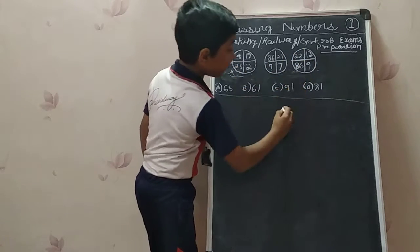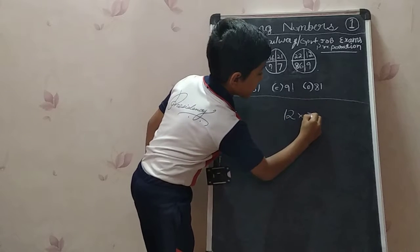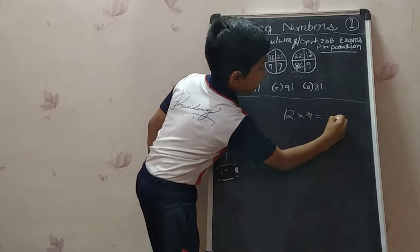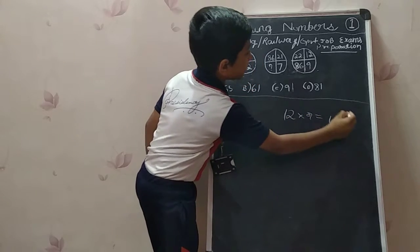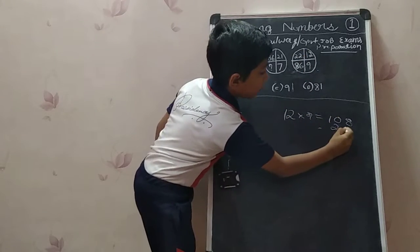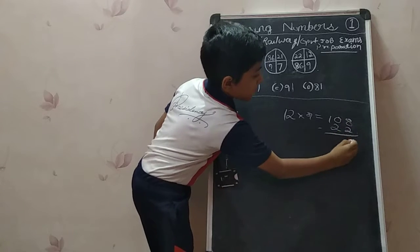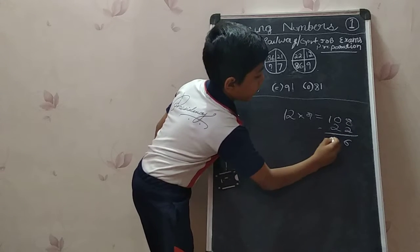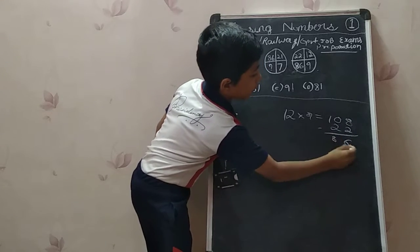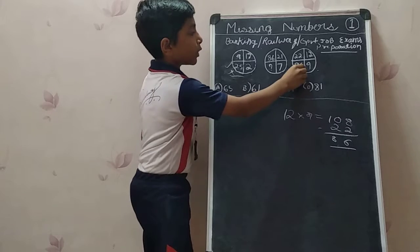20 into 9 equals 108, minus 22 equals 86. Yes, it works.